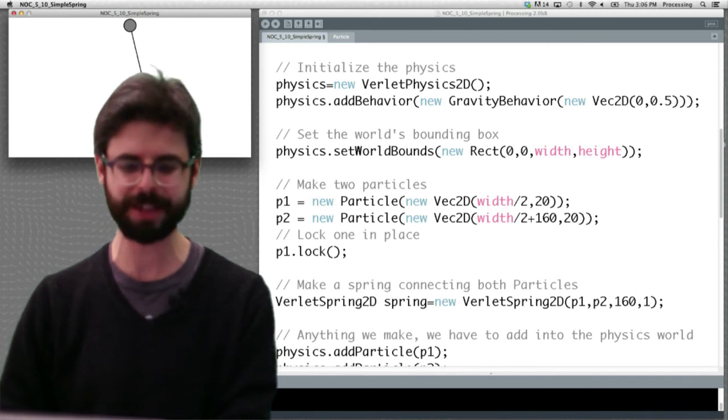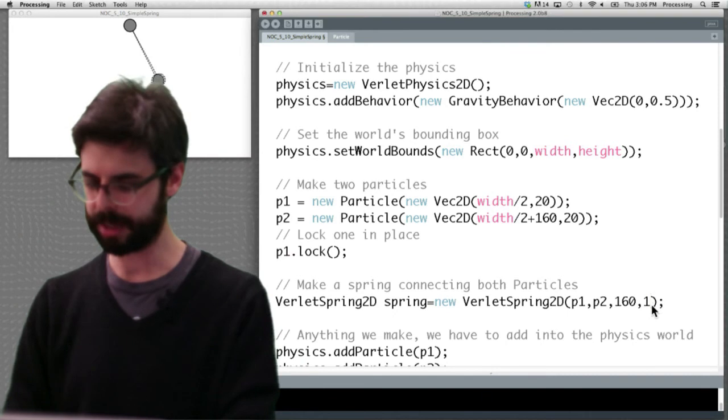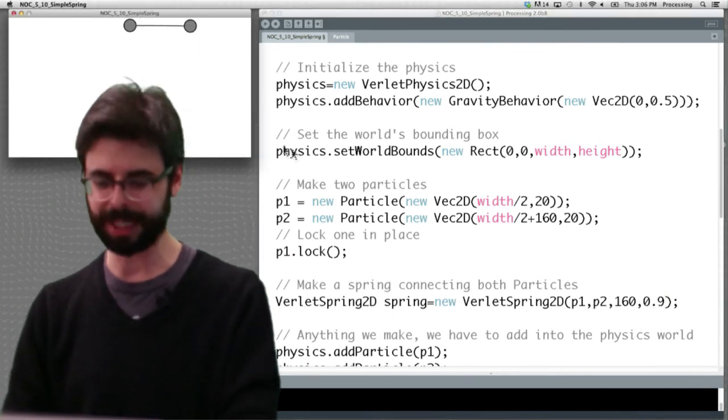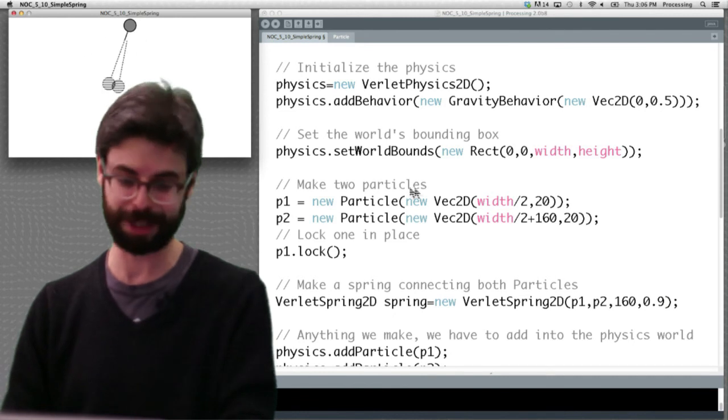But if I make this value 1 and I grab it, like I can't right now, it's not even letting me pull it. So 1 makes it a completely perfect rigid body. And if I make it 0.9,